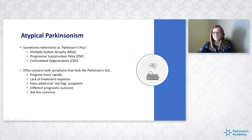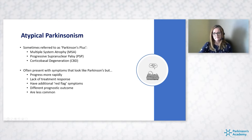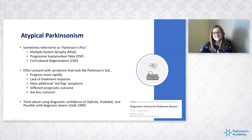These conditions often present like Parkinson's but with some key differences. They progress more rapidly, there's often a lack of treatment response particularly to levodopa, and they have additional red flag symptoms. Prognostic outcomes differ: MSA has a life expectancy of seven to ten years from first symptoms and can cause sudden death; PSP is typically five to seven years from symptom onset; corticobasal degeneration is usually five to ten years. These are less common conditions — around 3,300 people with MSA and 4,000 with PSP across the UK.